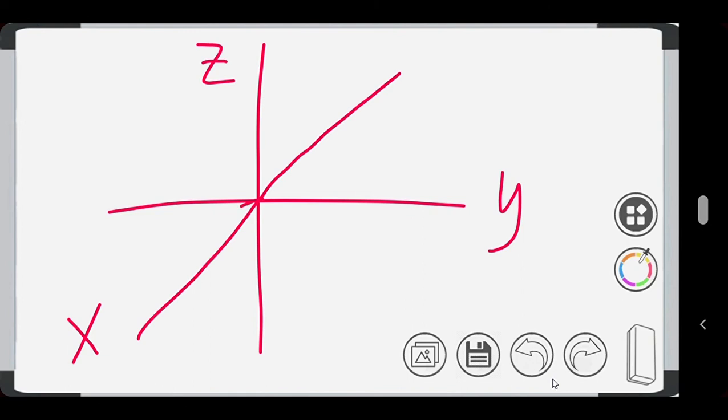The trace in the yz plane is the origin. The trace in the xz plane is, again, a parabola, which is an equation of x is equal to 4z squared, which opens in the positive x direction. Therefore, we can conclude that our surface is a paraboloid. And that's all.